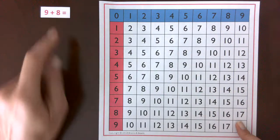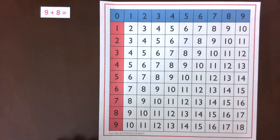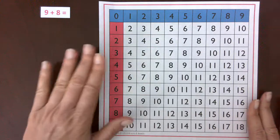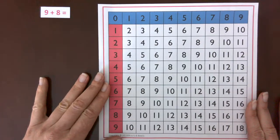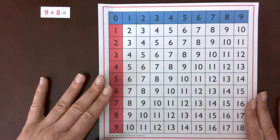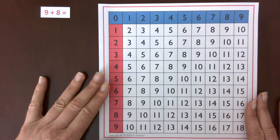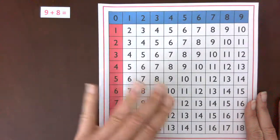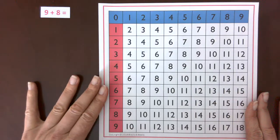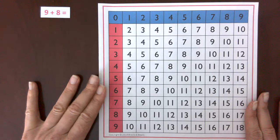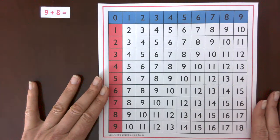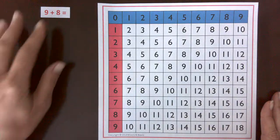9 plus 8 is 17. This is a printable addition chart that I have. There's a link in the description where you can get a download of this. I just printed it on paper, but you can print it on cardstock, you can laminate it and have it for use for your child or for your students.